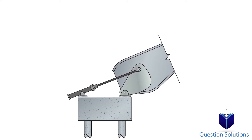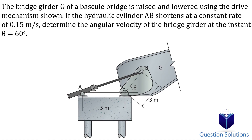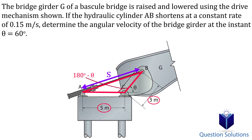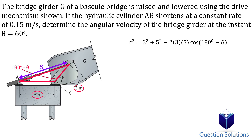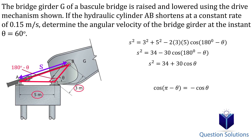Let's take a look at this question where we need to figure out the angular velocity of the bridge girder. The first step is to relate the displacement of the hydraulic cylinder AB to the angle — when the length of the cylinder changes, the angle also changes, so we label that distance S. We draw out the triangle; the diagram gives us a theta value on the outside, but we need the angle on the inside, which is 180 degrees minus theta. Now we have the lengths of two sides and an angle, so we apply the law of cosines and simplify. Using the trigonometric identity that cos(π − θ) = −cos θ, we substitute and simplify further.